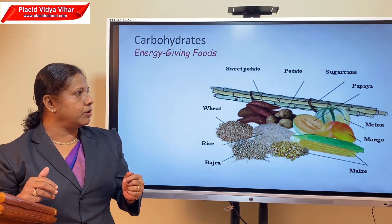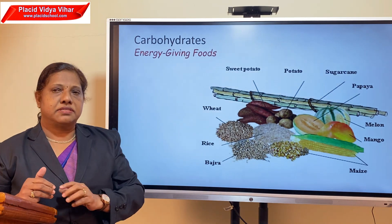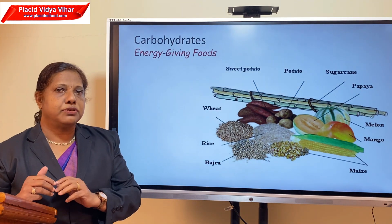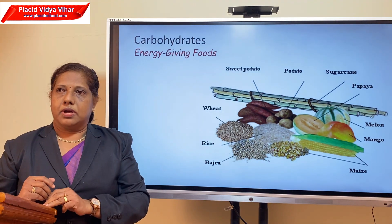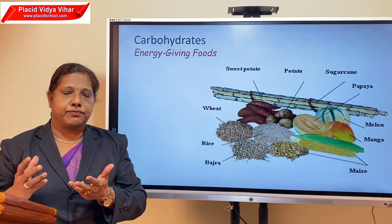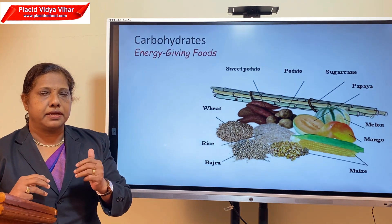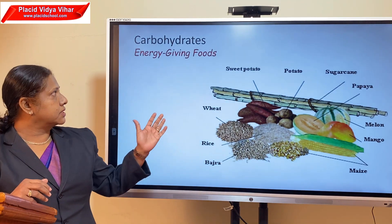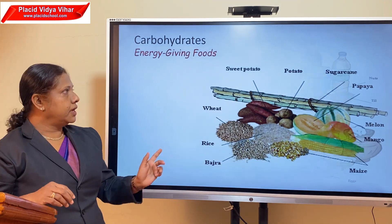Fruits like mango, melon, and papaya are also a good source of carbohydrate. As children you need a lot of carbohydrate and you have to include this kind of food in your diet.